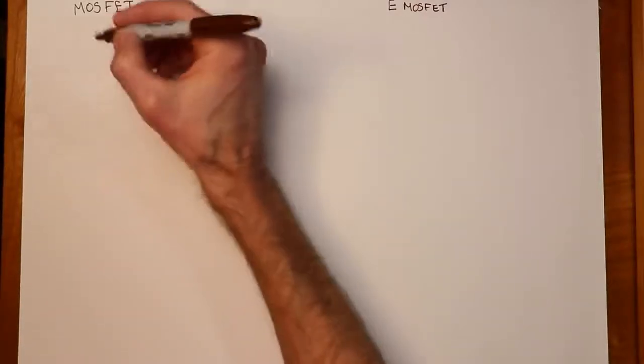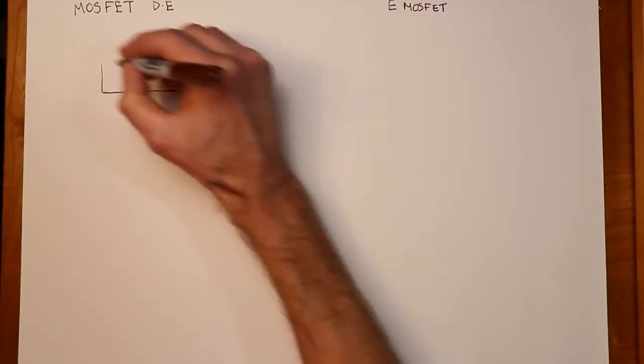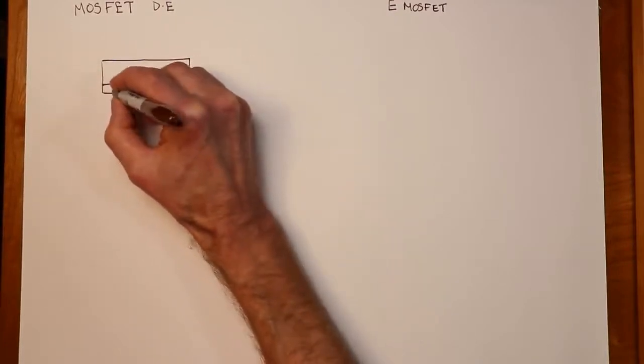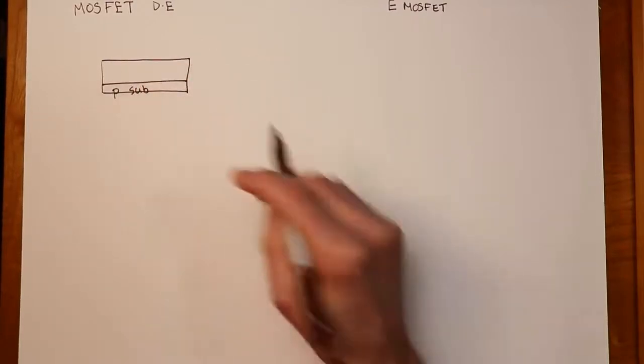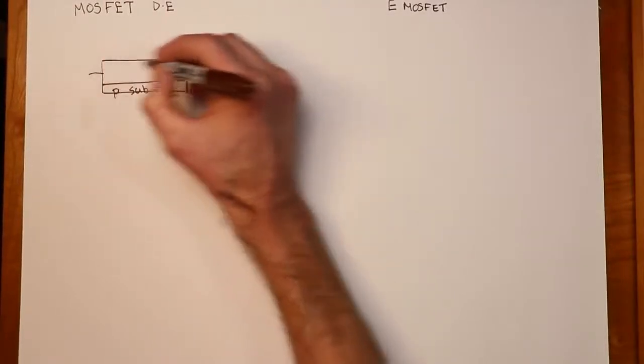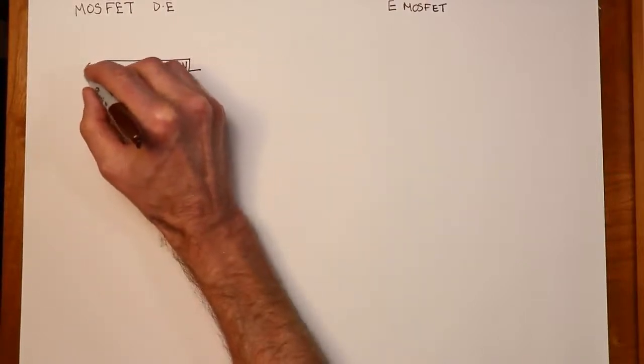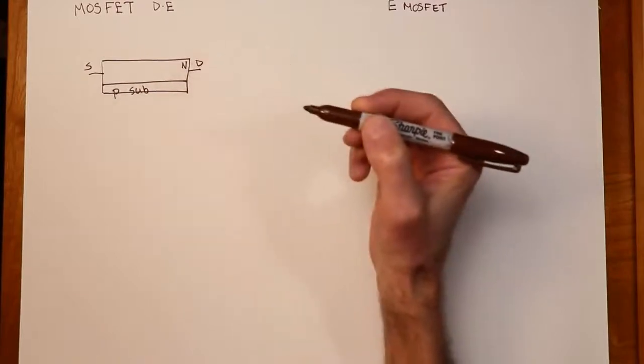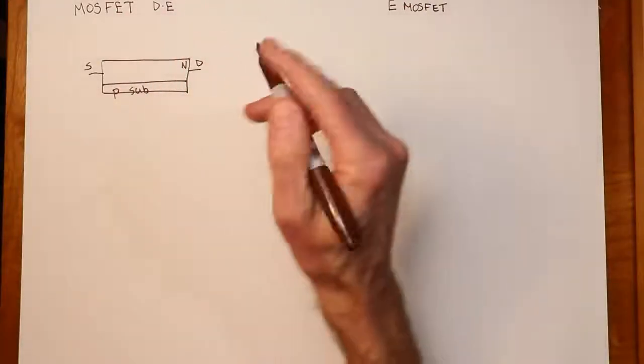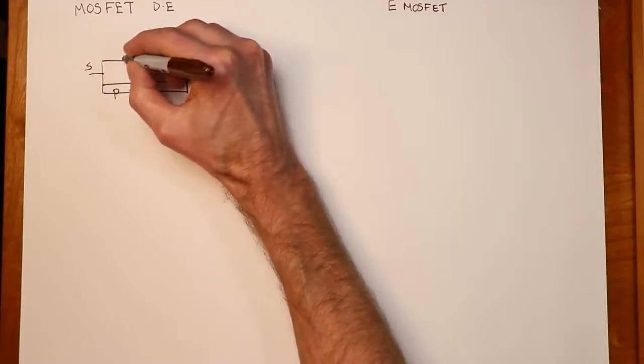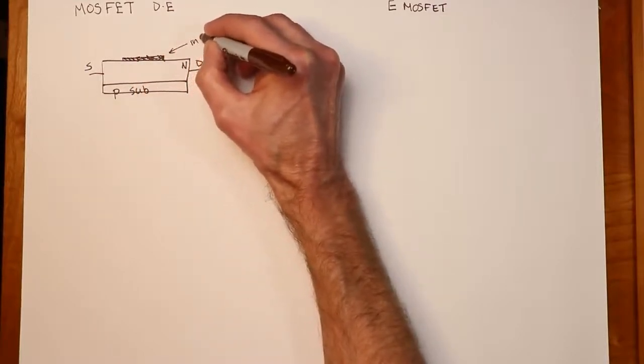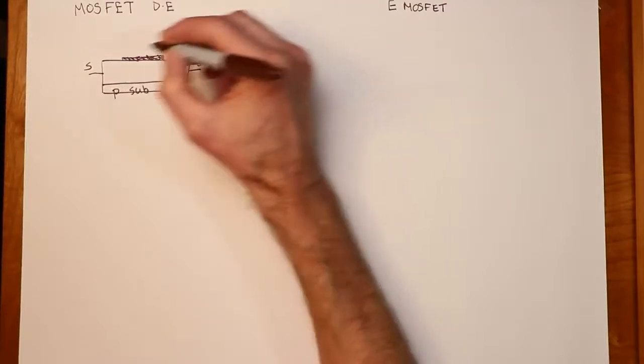We would be looking at a structure something along this line. I'm going to draw, basically down here we have a P substrate. I am going to draw an N-channel version of this. So this material right here is N. We would have typical connections of source and drain. Now unlike a junction FET, which relies on the use of a PN junction, the MOSFET doesn't do that. In fact, what we have here is an insulation layer. And then there's a metalization layer on top of that.